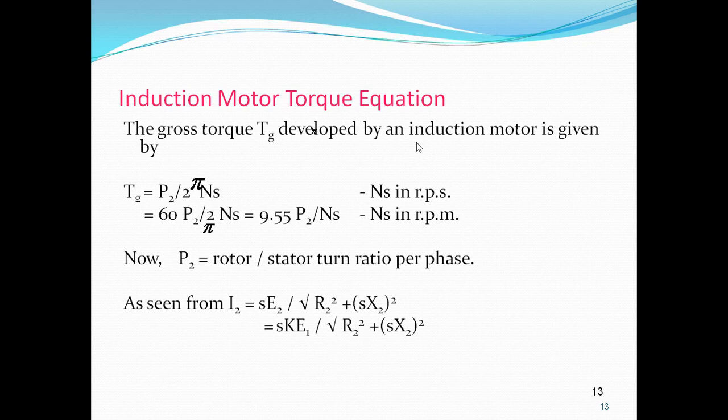When slip = 0, rotor rotates at synchronous speed NS. When slip = 1, rotor speed is 0. The torque as a function of rotor speed can also be shown in the figure. The magnitude of torque at zero speed is called starting torque — the starting torque developed by the rotor must be more than the torque required by the load connected to the motor shaft to enable the motor to start.